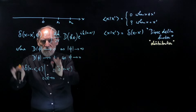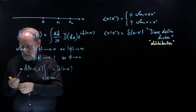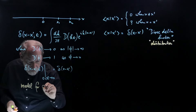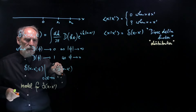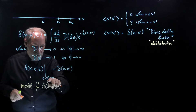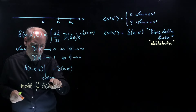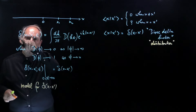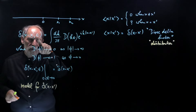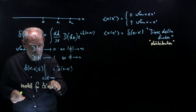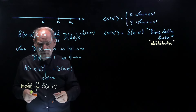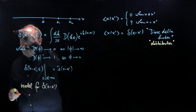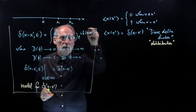To illustrate what this means: for every finite positive value of ε, the δ_ε(x − x') functions are all ordinary functions. They only become peculiar and singular in the Dirac delta function sense when we take the limit ε → 0.